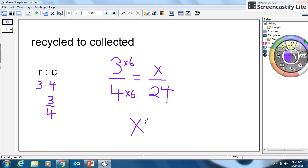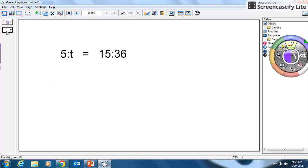So x is equal to 18. Or the ratio of the next week was 18 bottles were collected or recycled for every 24 that were collected. So 3 to 4 is equal to 18 over 24. All right. That's as simple as it gets.